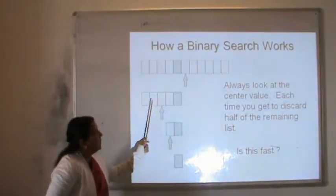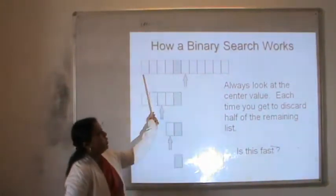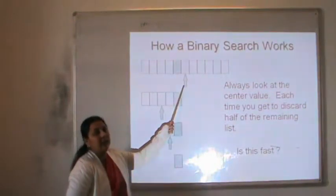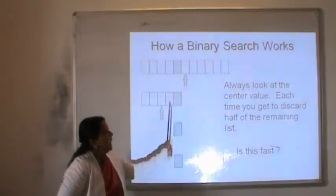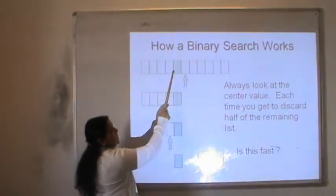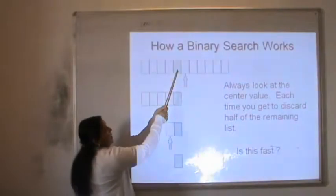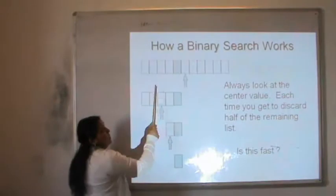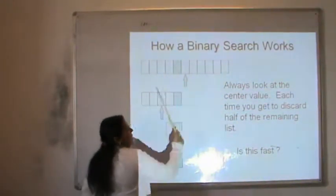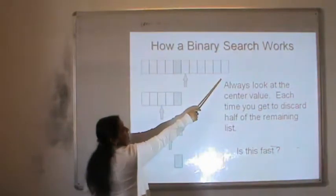How does binary search work? Suppose this is an array or list of records that has to be divided into two parts. To divide it, we find the center element — the element positioned in the middle. For a list of 11 elements (positions 0 to 10), the middle position is the 6th element, and the item we are trying to search is positioned at a particular place.